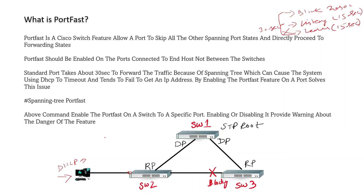When you enable PortFast, you can forward immediately. PortFast should only be used on host-connected ports — for example, a DHCP server, DNS server, or end-host connector. If you configure it on a switch-to-switch link, you will see a warning message because it can lead to STP looping.